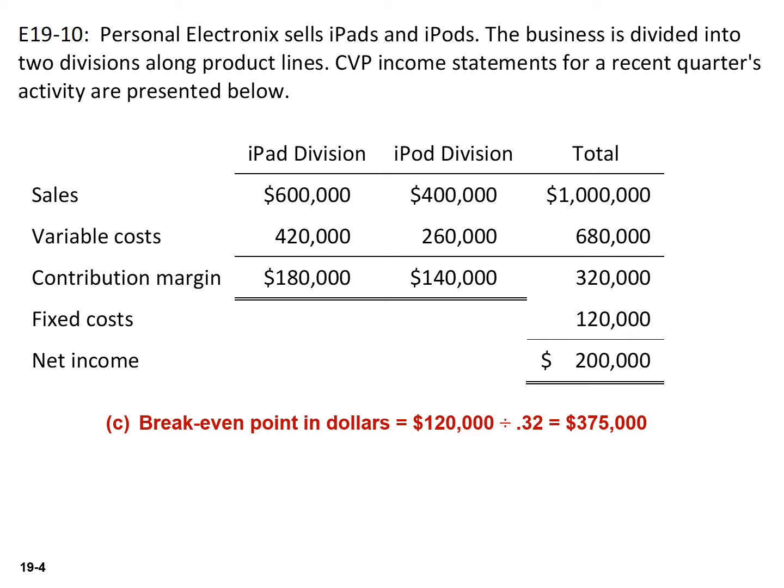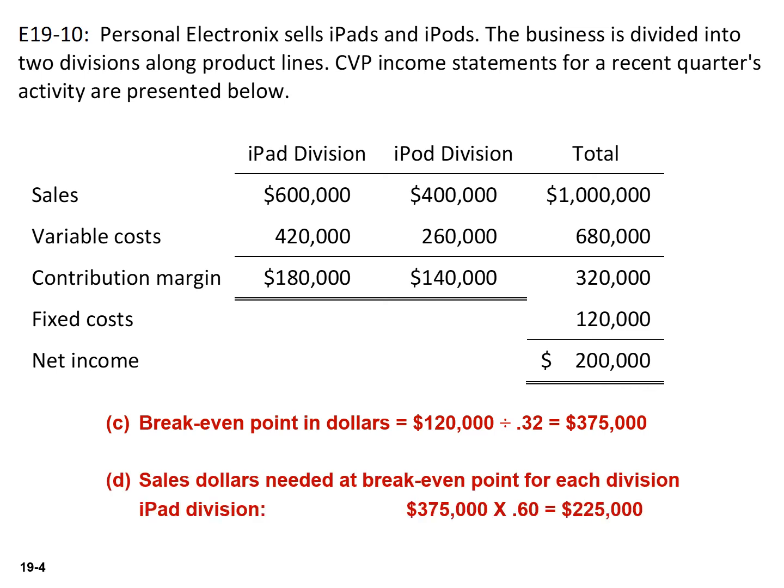The last thing we need to calculate is the sales level in dollars for each division at the breakeven point. We're simply going to take the sales mix and multiply that by the breakeven point in dollars. The iPad needs to generate $225,000 of sales and the iPod will generate $150,000 of sales in order for this company to breakeven.